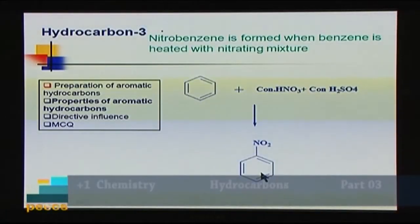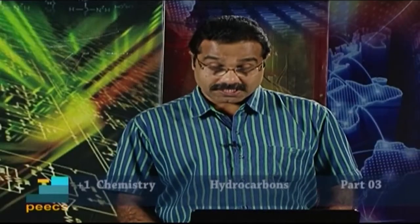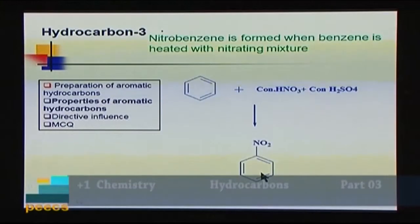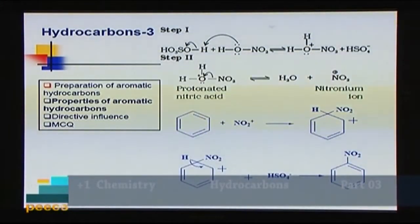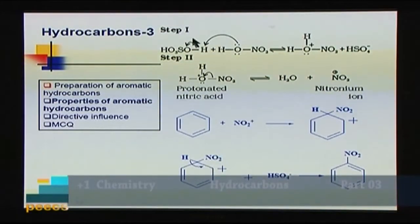The second reaction is nitration, which means treating the compound with concentrated nitric acid and concentrated sulfuric acid to form nitrobenzene. This mixture is called the nitrating mixture. Here also the mechanism involves three steps: generation of the electrophile, formation of a sigma complex, and abstraction of H⁺ by a nucleophile. Sulfuric acid donates H⁺ to nitric acid to form protonated nitric acid.